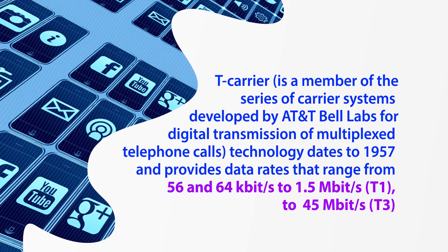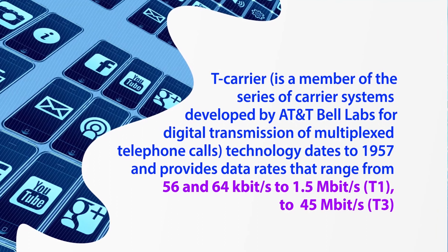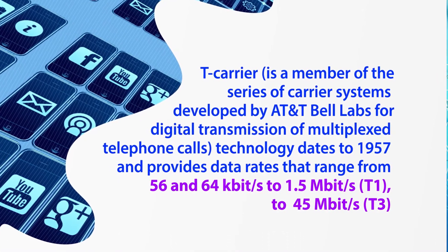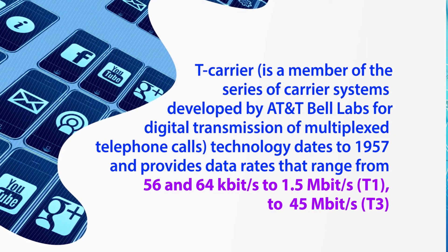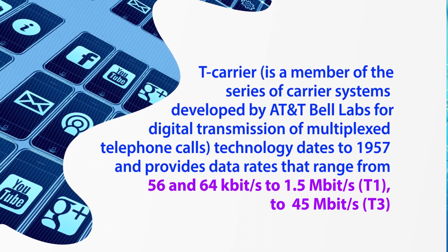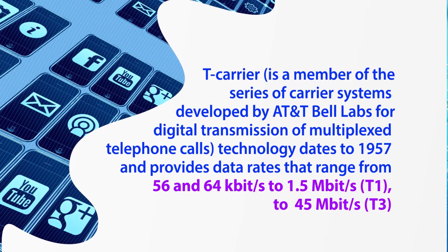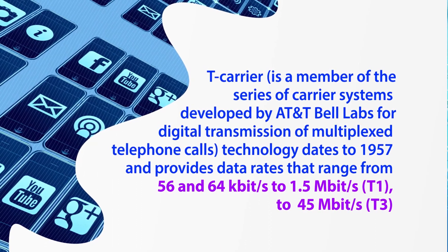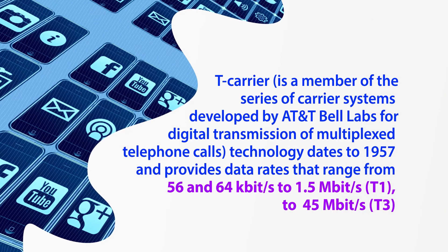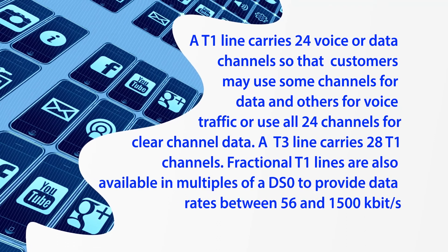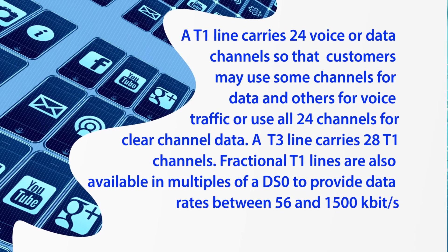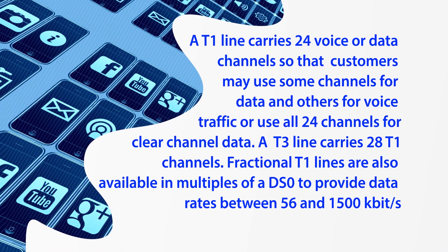T-Carrier is a series of carrier systems developed by AT&T Bell Labs for digital transmission of multiplexed telephone calls, dating back to 1957. It provides data rates from 56 to 64 kilobits per second up to 1.5 Mbps for a T1 line, and up to 45 Mbps for a T3 line. A T1 line carries 24 voice or data channels; customers may use some channels for data and others for voice or use all 24 for clear channel data. A T3 line carries 28 T1 channels. Fractional T1 lines are available in multiples of DS0, providing data rates between 56 and 1,500 kilobits per second.